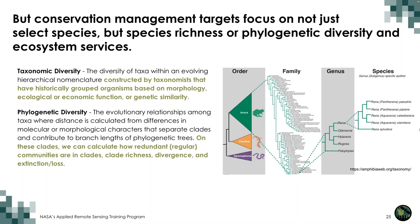Conservation management targets focus not just on select species but on species richness, phylogenetic diversity, and ecosystem services. Taxonomic diversity refers to diversity of taxa within the evolving hierarchical nomenclature constructed by taxonomists — it relies on expert knowledge and can change over time, making temporal comparisons difficult. Phylogenetic diversity captures evolutionary relationships among taxa, calculated from differences in molecular and morphological characteristics that determine branch lengths in the tree of life.